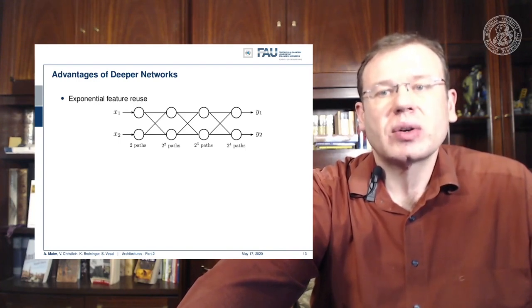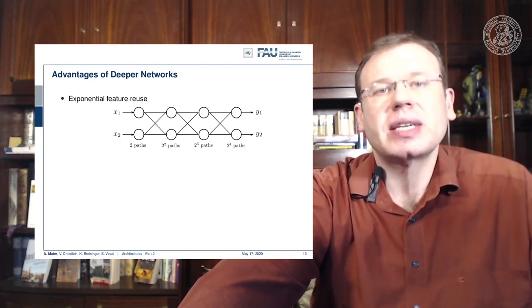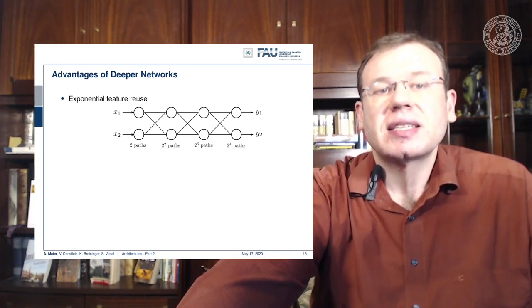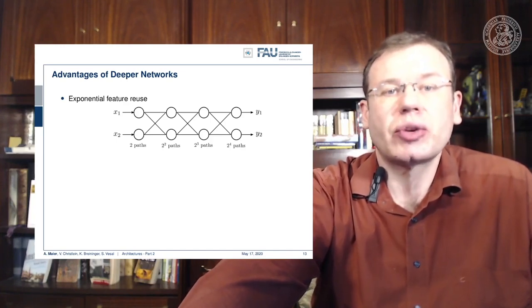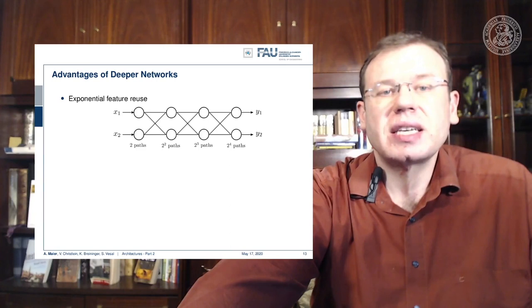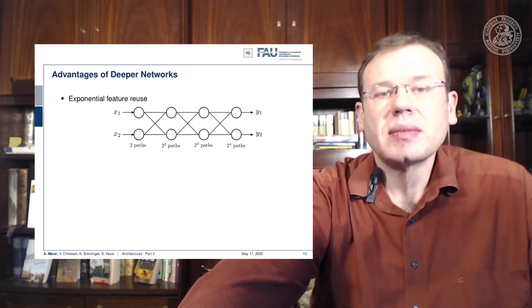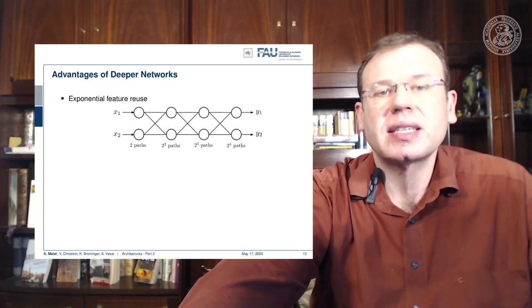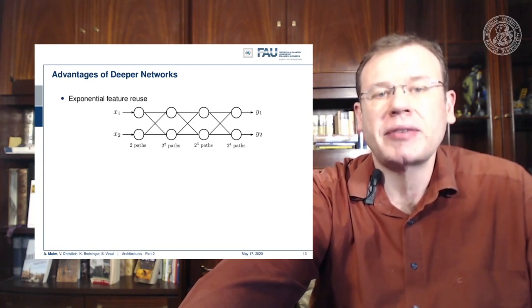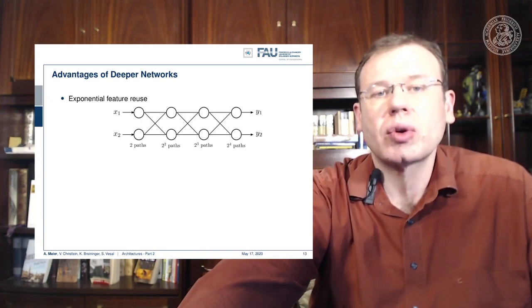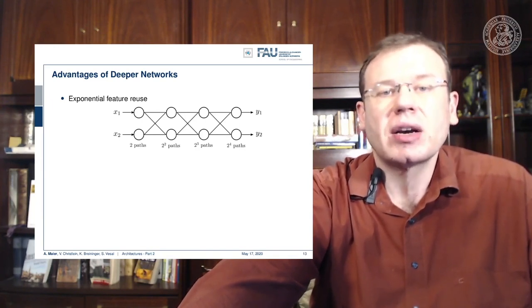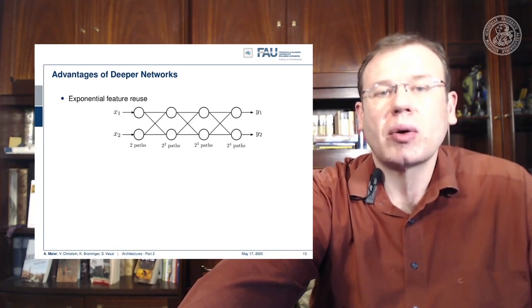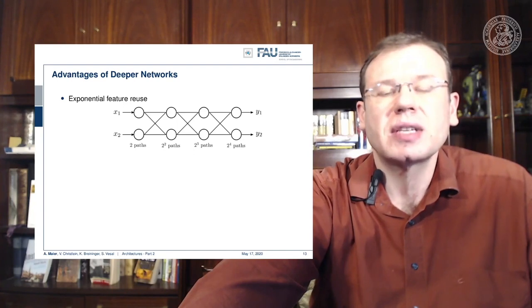One reason why those deeper networks may be very efficient is something that we call exponential feature reuse. Here you can see, if we only had two features, if we stack neurons on top, you can see that the number of possible paths is exponentially increasing. With two neurons, I have two paths. With another layer of neurons, I have two to the power of two paths. Then next layer, two to the power three paths, two